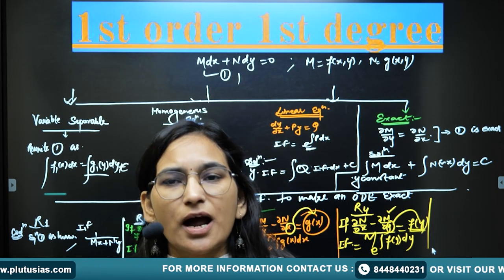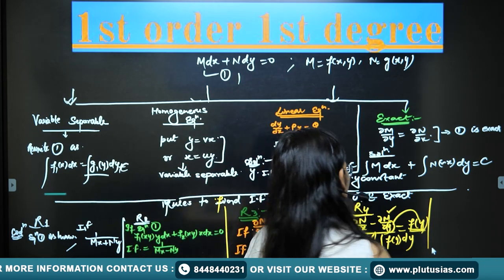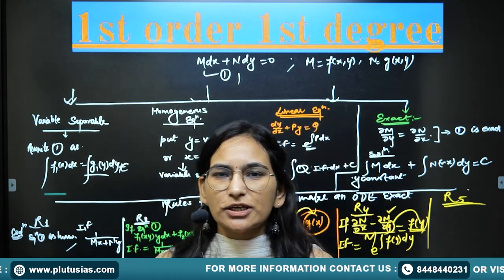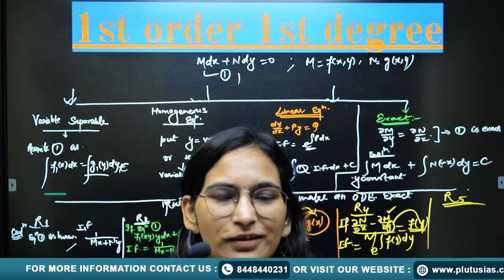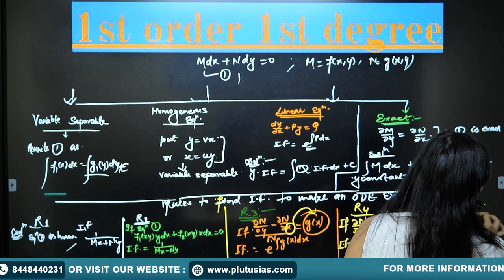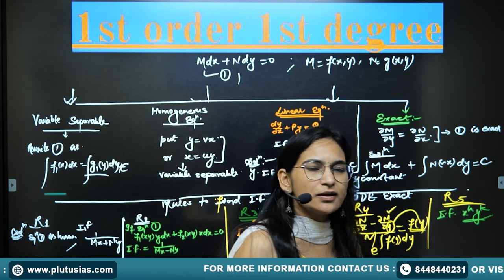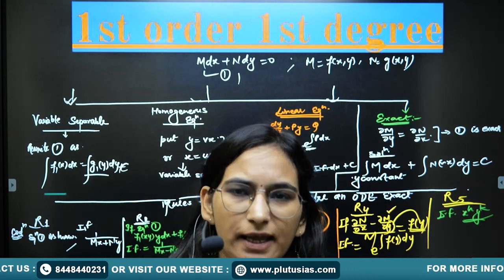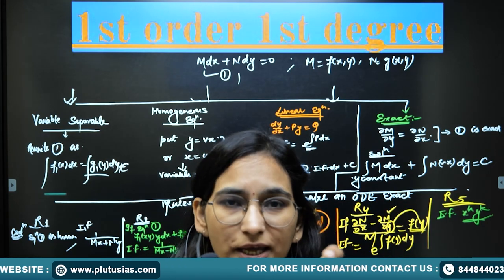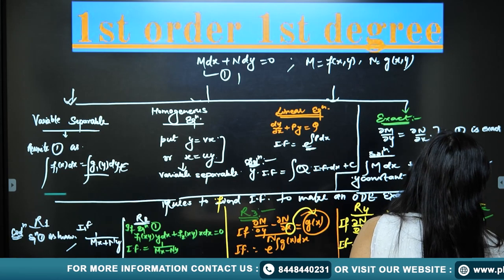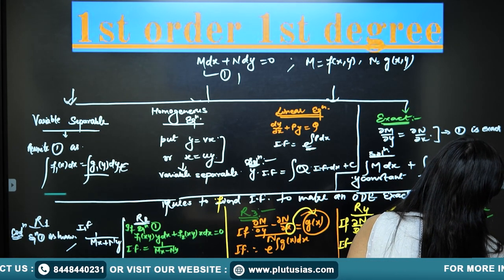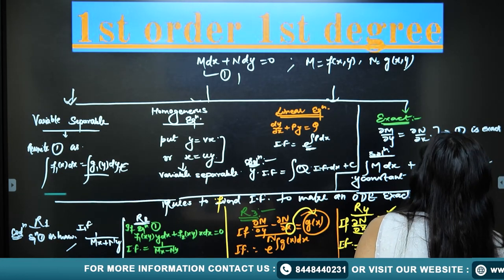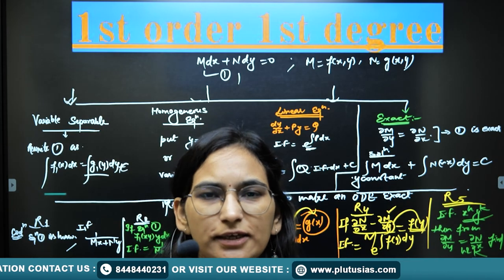Rule 5 is the last option if none of the previous four rules work. Assume the integrating factor is x^h · y^k. Multiply this to equation 1, then apply the exactness condition ∂M/∂y = ∂N/∂x and by equating the two sides find h and k. If you find h and k, that is your integrating factor and you can solve the equation.